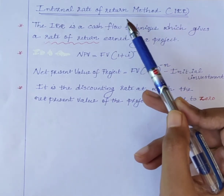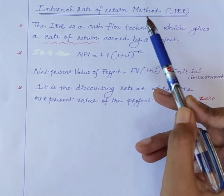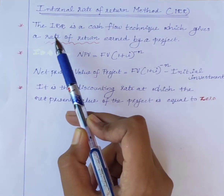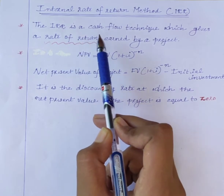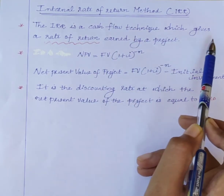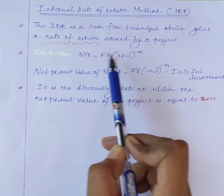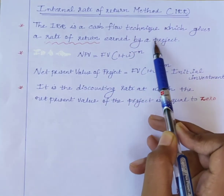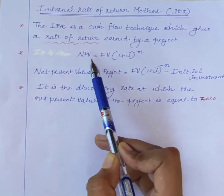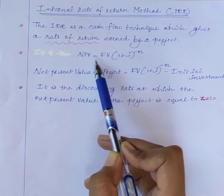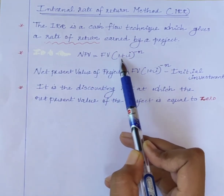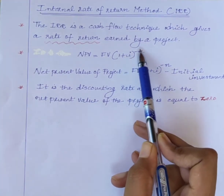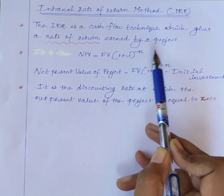This method also considers the time value of money for the analysis. The internal rate of return is a cash flow technique which gives the rate of return, IRR, earned by a project. We know that the net present value equation is: NPV = FV × (1 + IRR)^(−N), where I is the rate of return and N is the number of years.